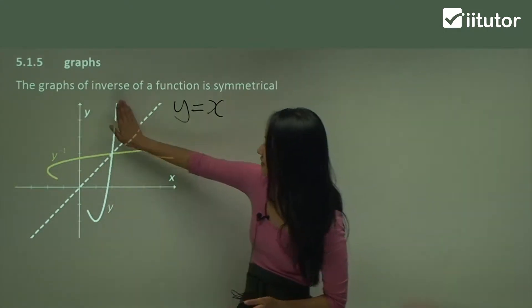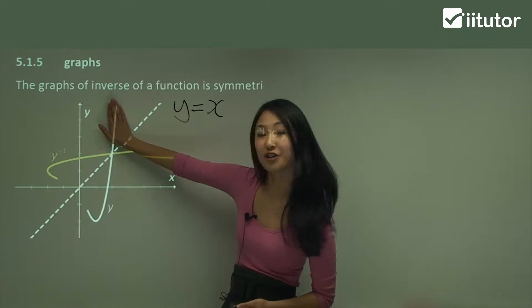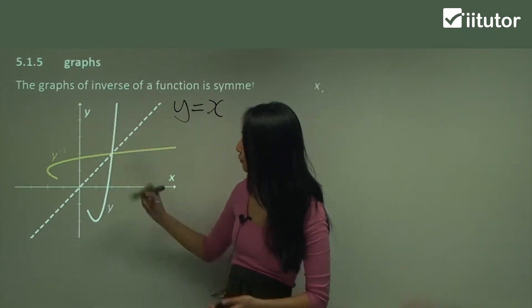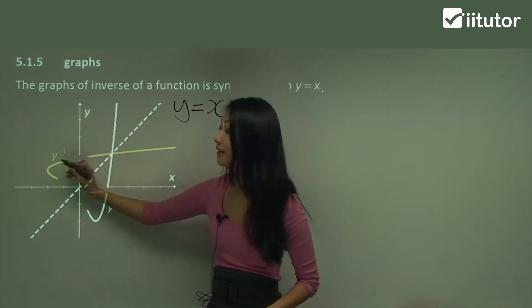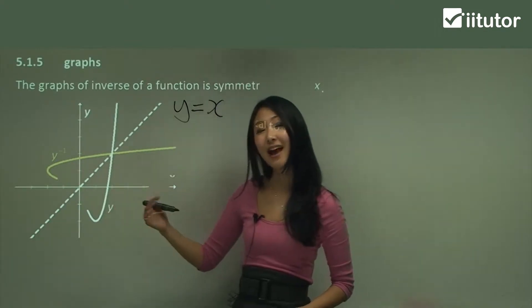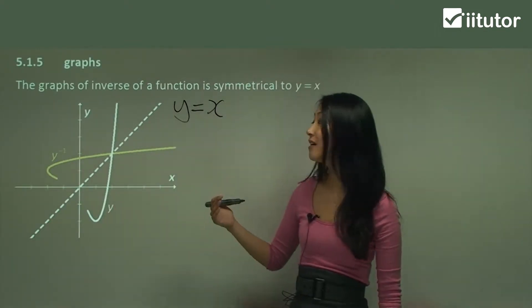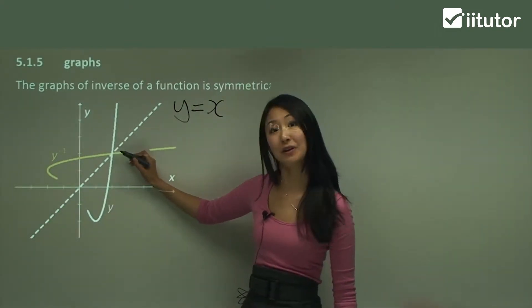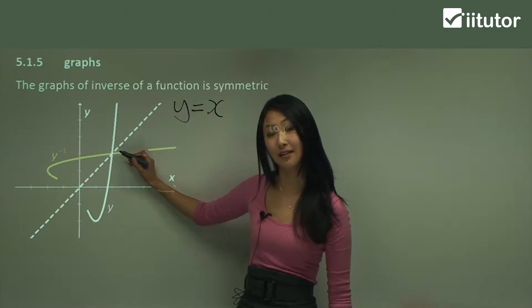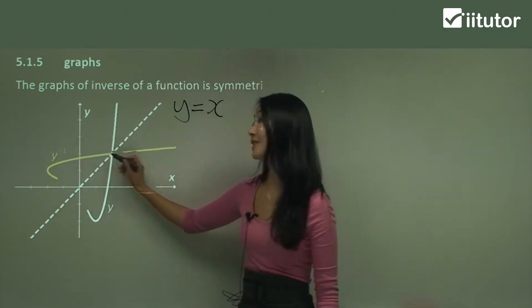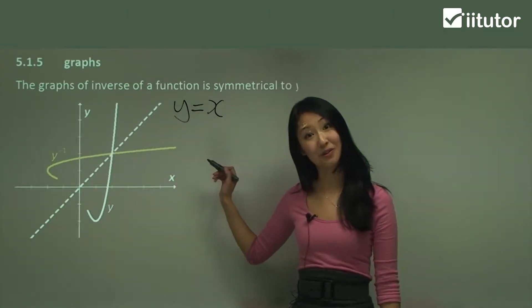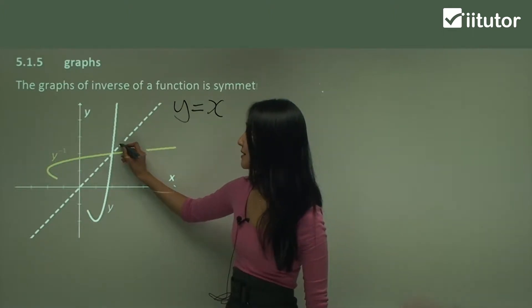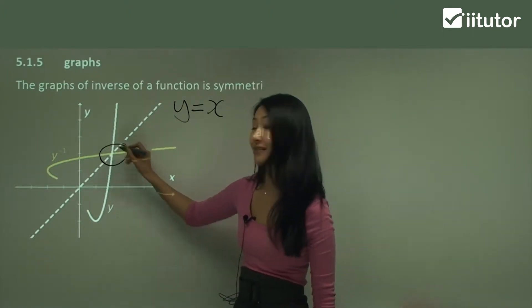Whereas if I'm just thinking about your bottom half there, can you see how that's just reflected into that yellow part there? And now wherever the original function crosses the y equals to x line, this is where the inverse function will also cross. So they always cross at the same point there.